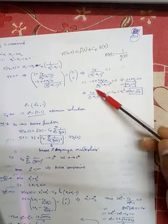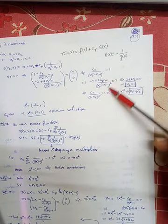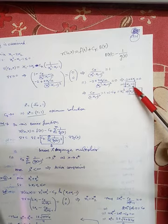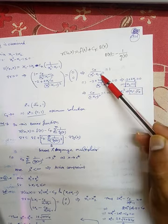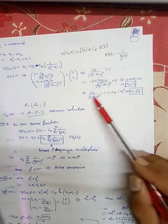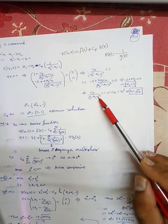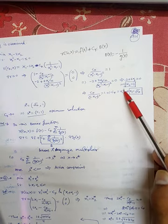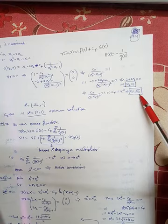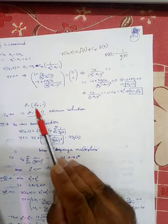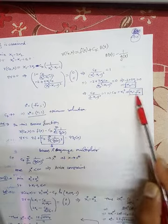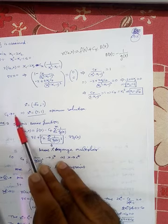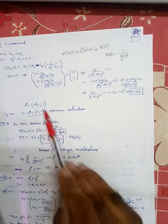From the first equation, c_k/(x_2² − x_1 − 1)² = 1. Substituting into the second: −2 + 2x_2 = 0, so x_2 = 1. Then substituting x_2 = 1 into the first equation: c_k/(1 − x_1 − 1)² = 1, giving c_k = x_1². So x_1 = √c_k. Hence x* = (√c_k, 1). Since c_k → 0, x* → (0, 1). This is the optimum solution.